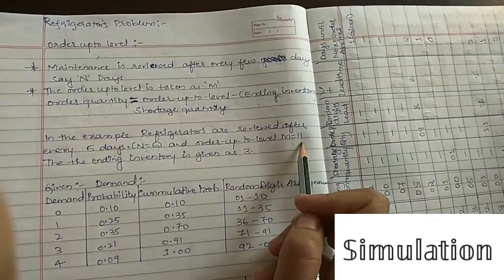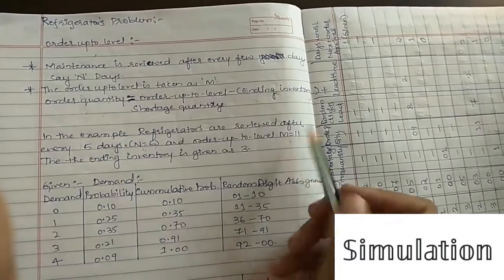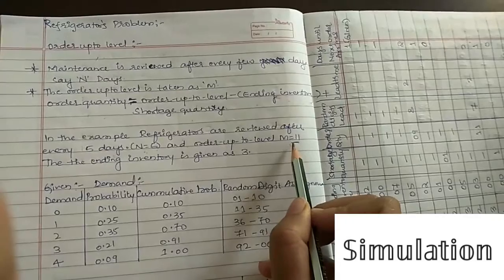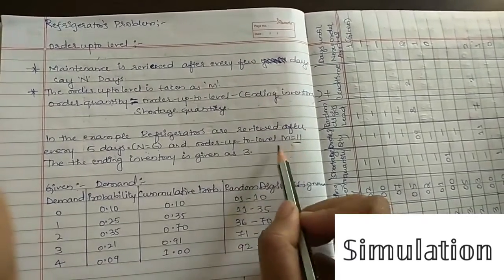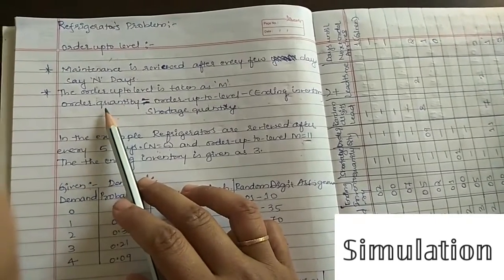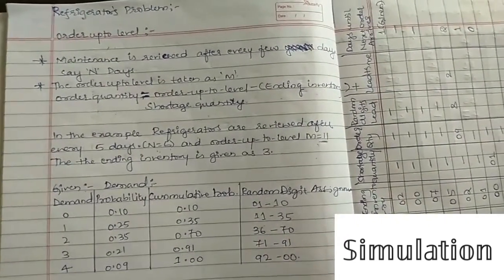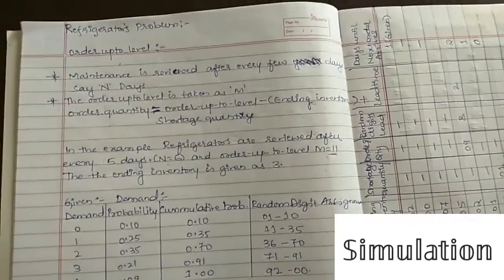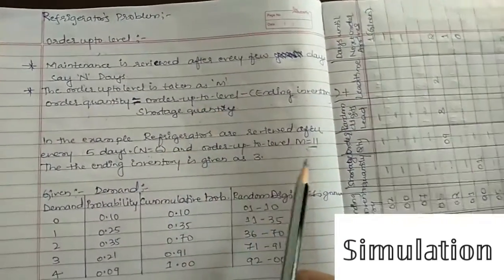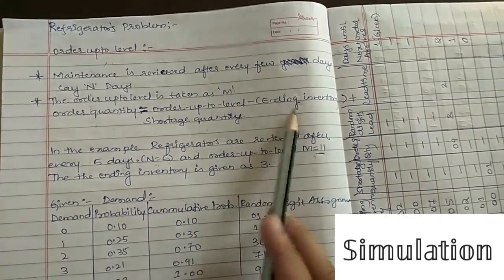The order up to level is denoted by M and is given here as 11, meaning you can order up to a maximum of 11. Order quantity and order up to level are different: order quantity is the actual quantity you are ordering, whereas order up to level gives you the maximum number that can be ordered — up to 11 refrigerators — depending on ending inventory and shortage.